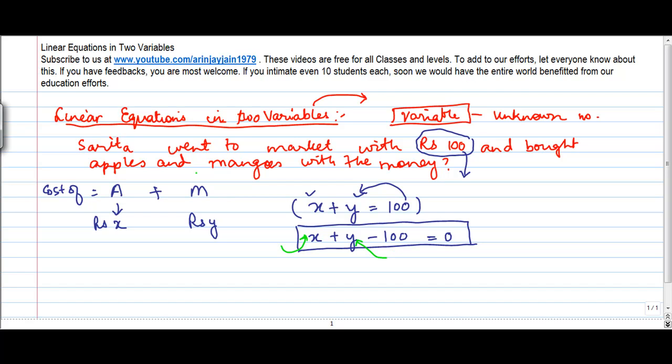So an equation which has two variables and the power - the power means, let's say here we mean x to the power 1, y to the power 1 - the power of the variables is only 1, are called linear equations in two variables.